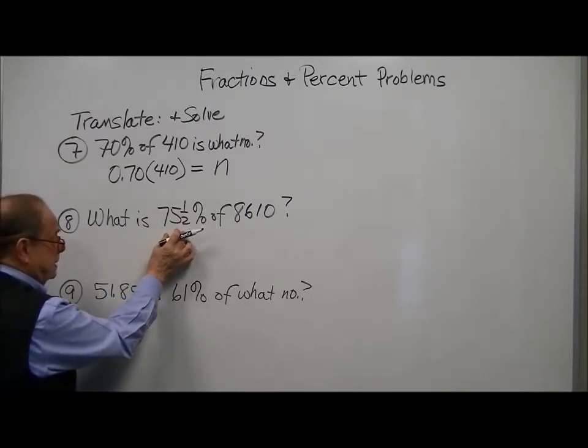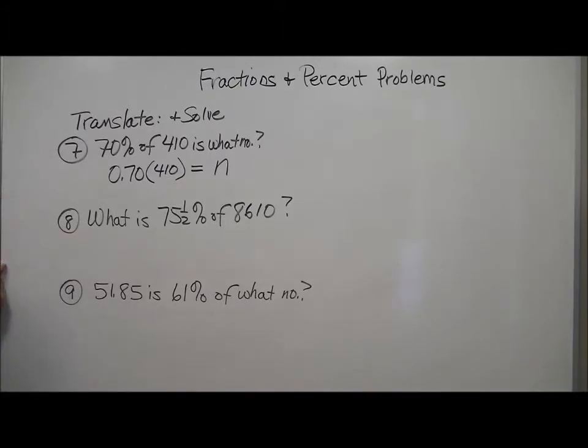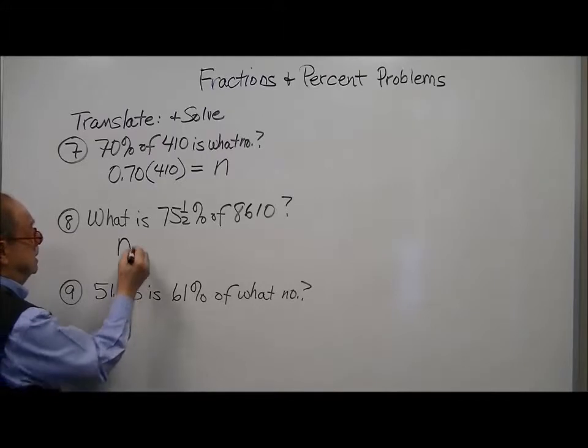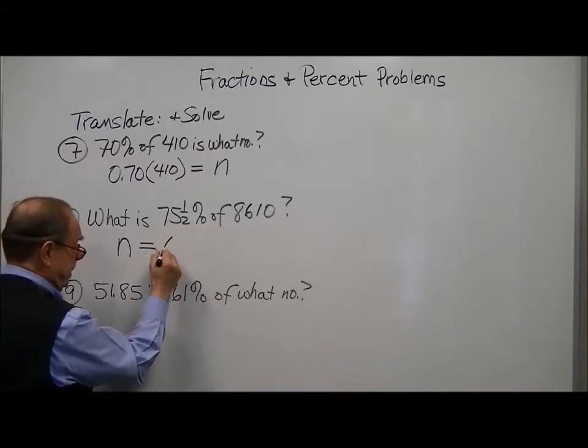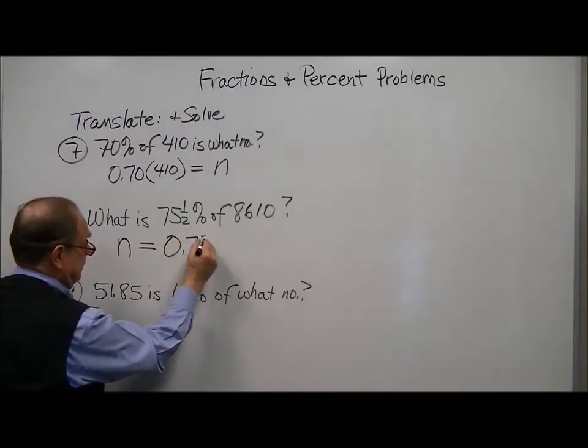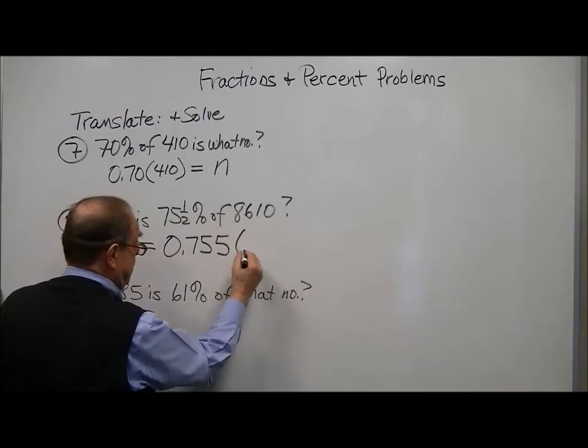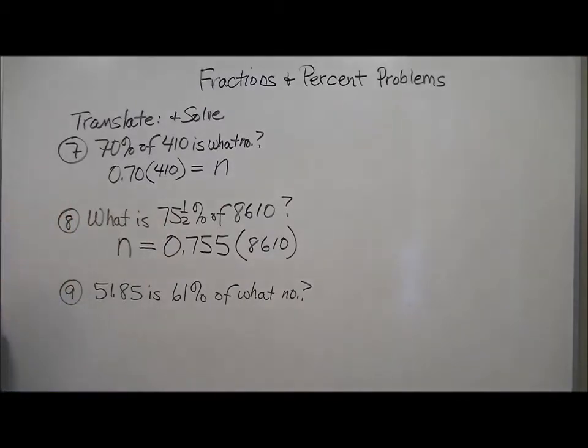What is 75.5% of this? And you might say that's just an arithmetic problem. Well, mostly, but you could make it an algebra problem by saying 'what', that's your number. N is equal sign. Convert this to a percent. And the one-half becomes a 5. 'Of' is still multiplication. And there's, in a sense, a very simple equation for number 9.